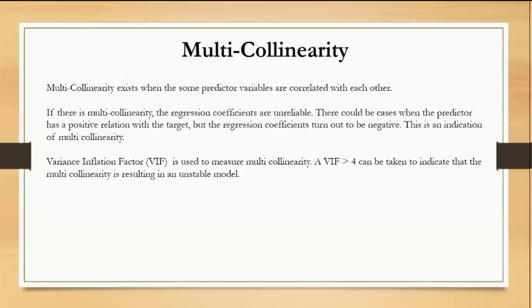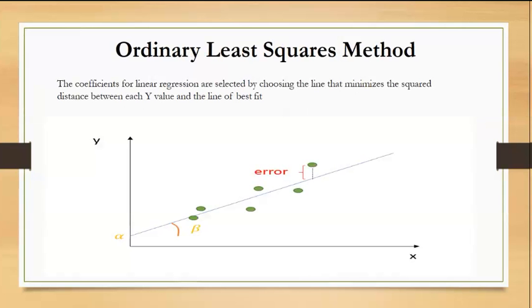So next concept, ordinary least squares method. I mentioned earlier that regression coefficients are estimated using ordinary least squares method. What this method means is this: once you have plotted x against y, you attempt to draw a straight line which connects these points best. You can draw multiple straight lines actually like this, like this. So you need to find the line that best fits your data now.